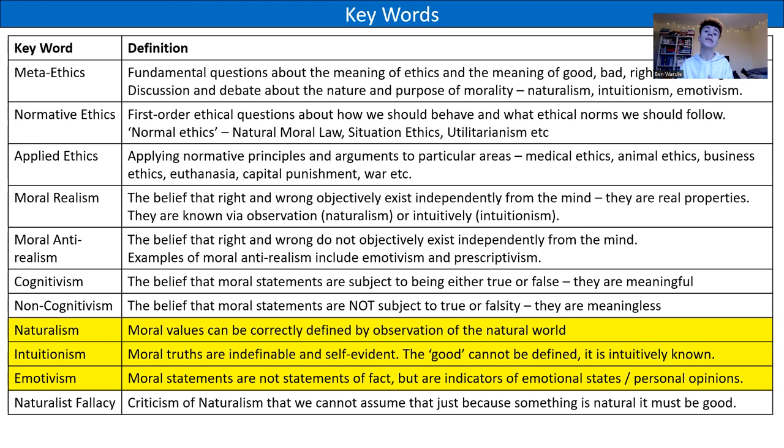Today we'll be looking at intuitionism and G.E. Moore's idea that goodness is a simple concept, self-evident to us, much like the colour yellow — not something we can define, but something we can intuitively identify. We'll also be looking at emotivism. When we studied natural moral law and utilitarianism, we were looking at examples of theological naturalism and ethical naturalism, but we'll cover that in much more detail as we go through this video.